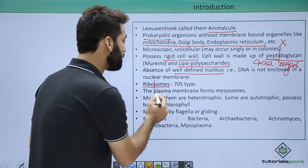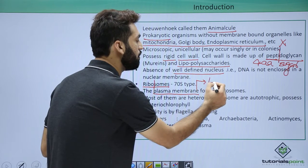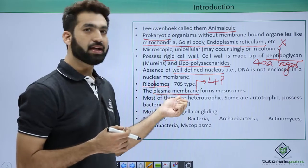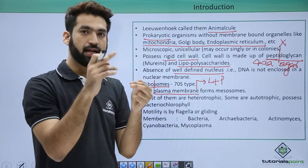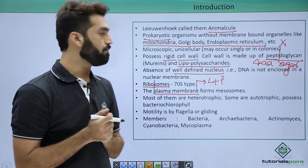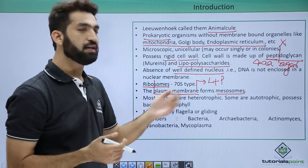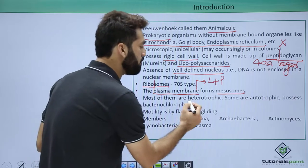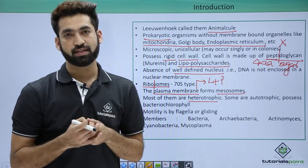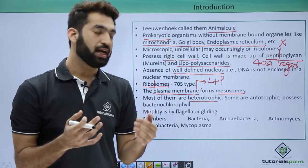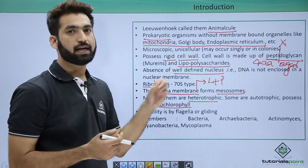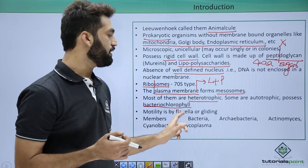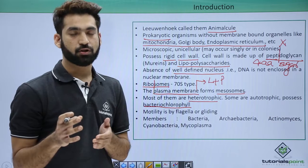The plasma membrane in all organisms is made up of lipids and proteins, so the cell membrane is always lipoproteinaceous. In Kingdom Monera, the cell membrane forms infoldings towards the cytoplasm called mesosomes. Most Kingdom Monera members are heterotrophic, but autotrophic nutrition is also present. For autotrophic nutrition they have a pigment called bacteriochlorophyll, which traps light and helps in photosynthesis of bacteria. Bacteria can be heterotrophic, chemotrophic, or phototrophic, making Kingdom Monera the most nutritionally diverse kingdom.